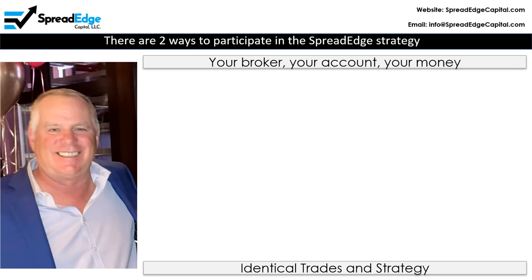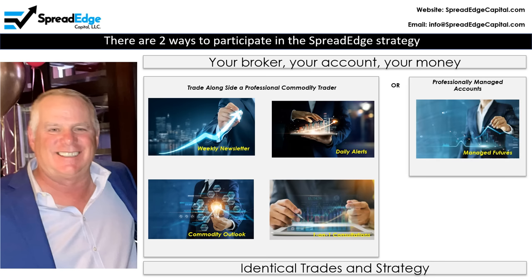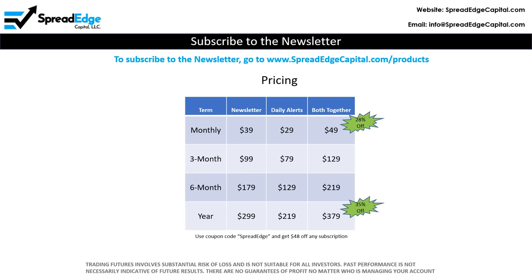You can participate in the SpreadEdge strategy in two ways. Both involve your broker, your account, and your money. This can be done through a subscription service where you place the trades yourself based on the recommendations posted in advance in the weekly newsletter, or through a professionally managed account for the standard management and incentive fees. Both options have identical trades and strategy. Please like, share, and subscribe. To subscribe to the newsletter, go to www.spreadedgecapital.com/products. You can also use coupon code SPREADEDGE at checkout and get $48 off any subscription, allowing you to try the monthly subscription for just $1.